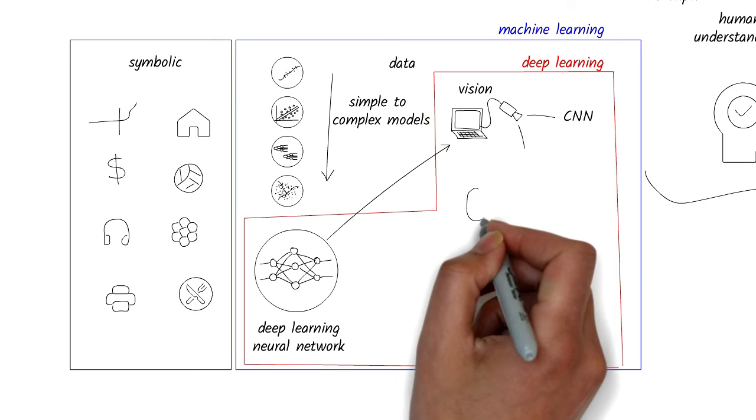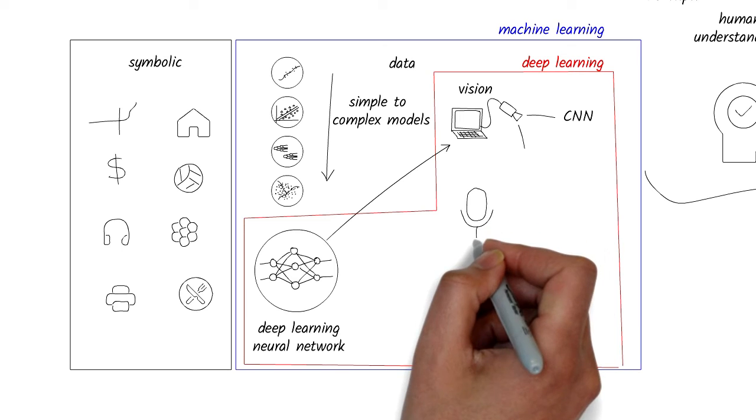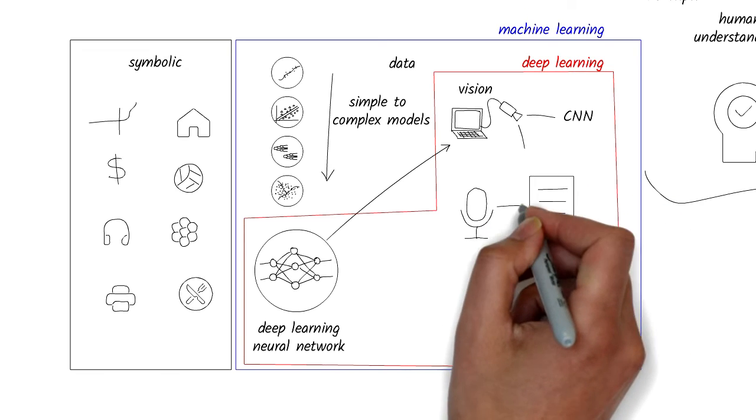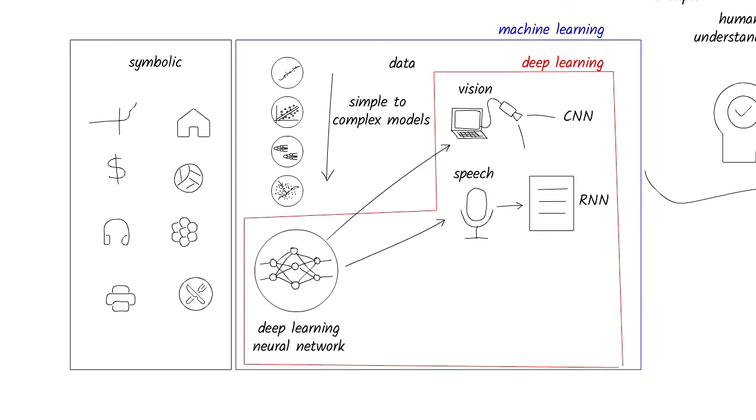Another variation of the deep neural network is called a recurrent neural network. This type can represent temporal patterns, such as voice, and we can use it for voice-to-text conversion.